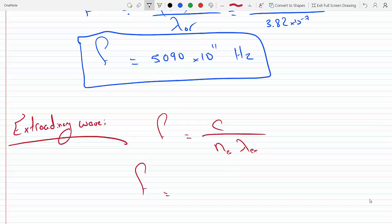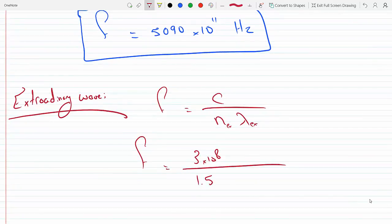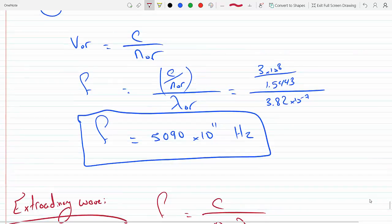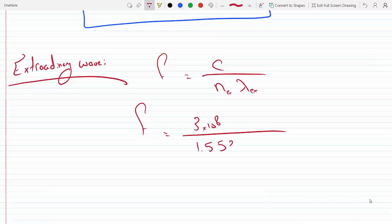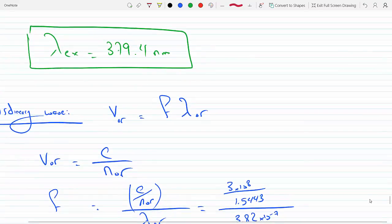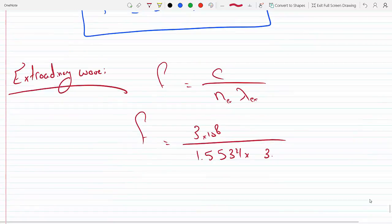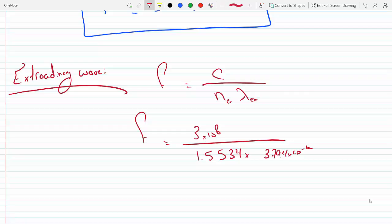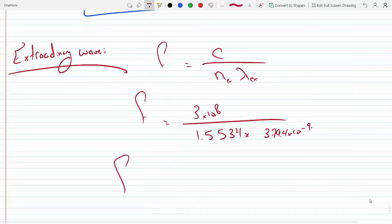Plugging the numbers in, we will get 3 times 10⁸ over 1.5534 times 379.4 times 10 to the minus nine. Plug it in on the calculator and we will get the frequency to be 5090 times 10¹¹ hertz.